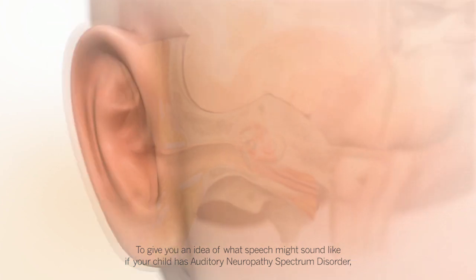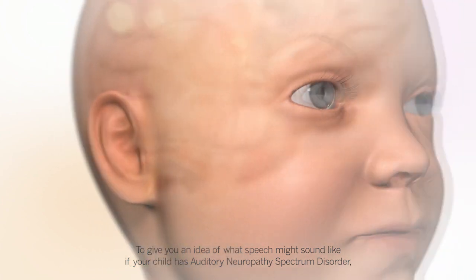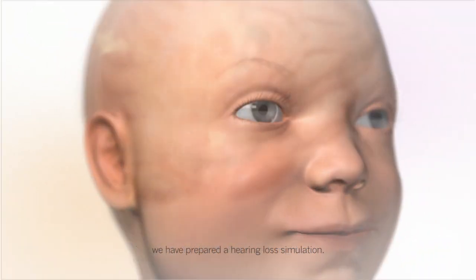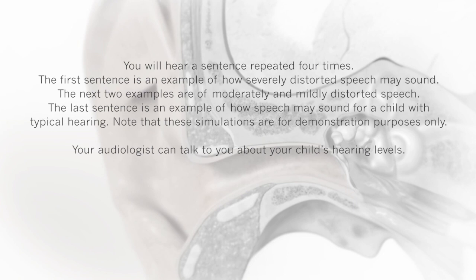To give you an idea of what speech might sound like if your child has Auditory Neuropathy Spectrum Disorder, we have prepared a hearing loss simulation. You will hear a sentence repeated four times. The first is an example of how severely distorted speech may sound. The next two examples are of moderately and mildly distorted speech. The last sentence is an example of how speech may sound for a child with typical hearing. Note that these simulations are for demonstration purposes only. Your audiologist can talk to you about your child's hearing levels.